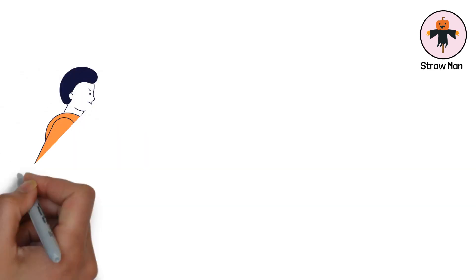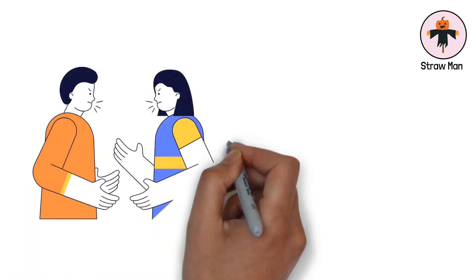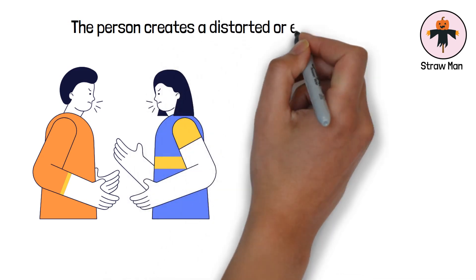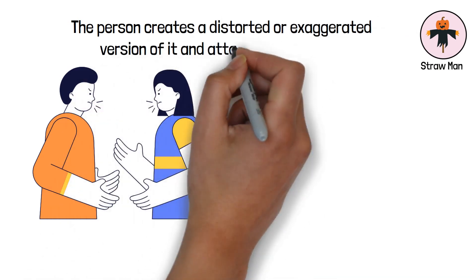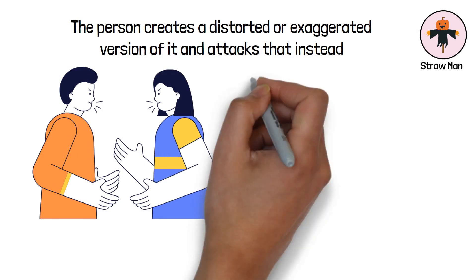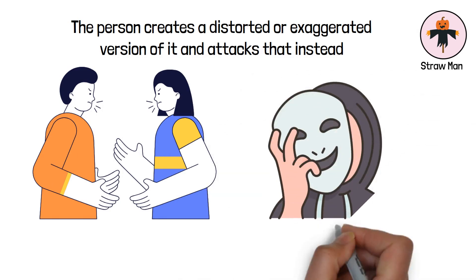2. Strawman. The strawman fallacy involves misrepresenting someone's argument to make it easier to attack. Instead of addressing the actual argument, the person creates a distorted or exaggerated version of it and attacks that instead. This fallacy is misleading and deceptive because it fails to engage with the original argument.